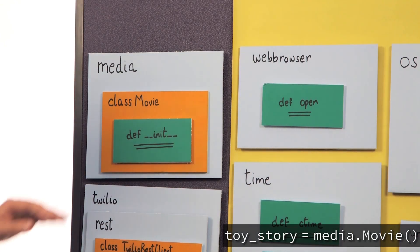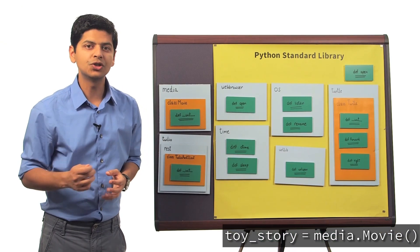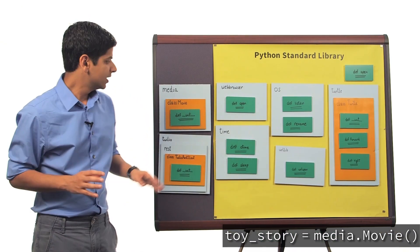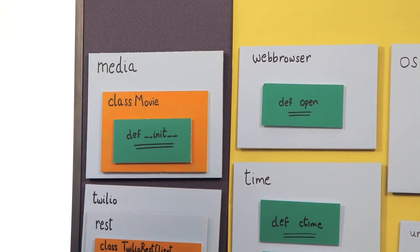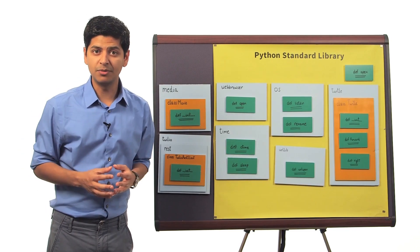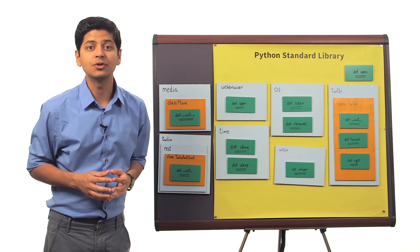So to summarize, this function init initializes or creates space in memory for the new instance toyStory. By the way, this function init is also called a constructor, because it constructs space in memory for the new instance, which in this case happens to be toyStory.